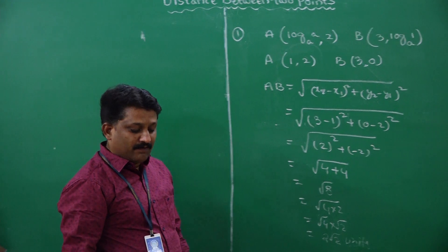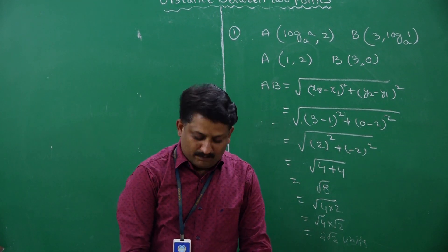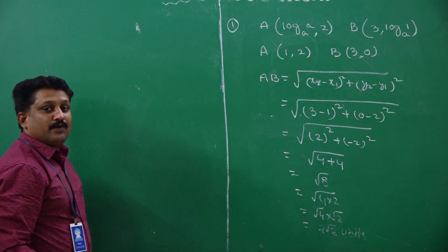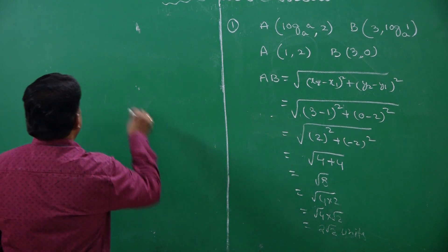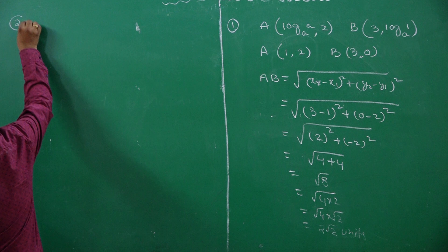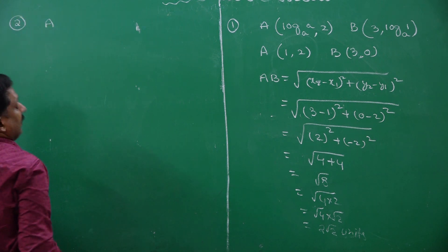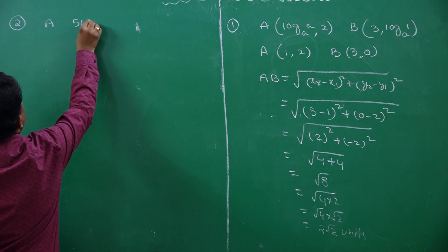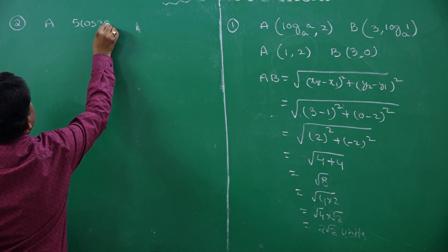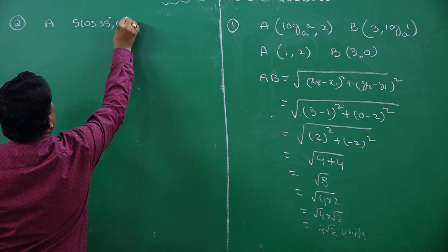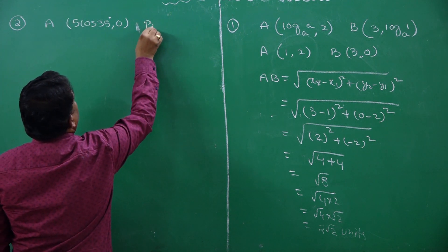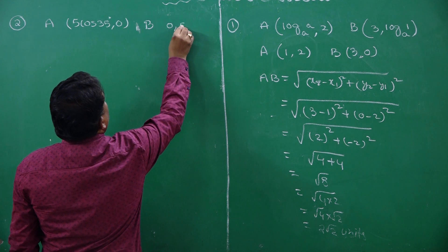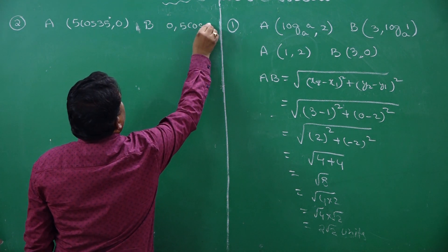Now we will discuss one more problem: how to find out the distance between two points which are connected to trigonometric functions. The second problem: I need to find out the distance between these two points A(5 cos 35 degrees, 0) and B(0, 5 cos 55 degrees).